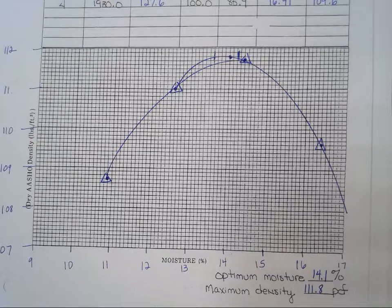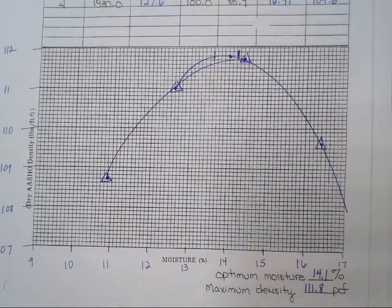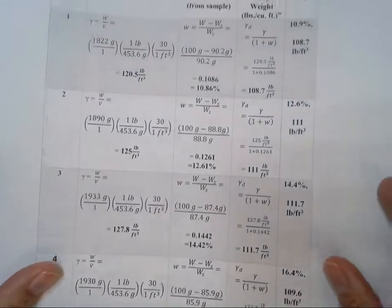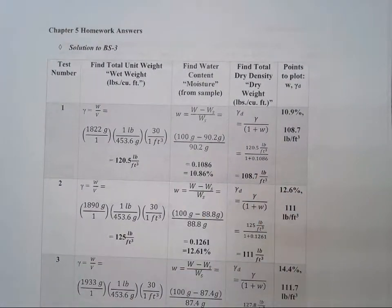So try these out. See what you can get. Make sure that your numbers are correct. You can look at these answers and check them before you graph it, just to make sure you're putting some good data in before you start to make your graphs. And then see if you can line up your optimum water content and maximum dry density with the solutions or close to what I've got. All right. Good luck.